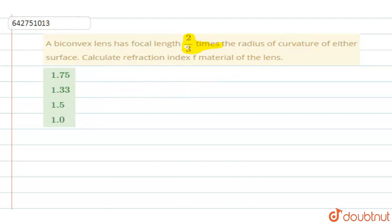They have given you a biconvex lens, means the radius of curvature of both the surfaces is the same. That type of lens we call it as a biconvex lens.